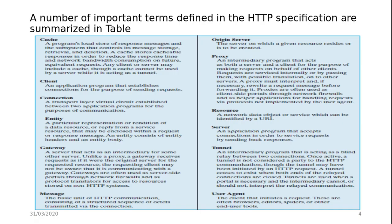A number of important terms defined in the HTTP specifications are summarized in a table. The first one is cache. A cache is a program, a local store of response messages and the subsystem that controls its message storage, retrieval, and deletion. A cache stores cacheable responses in order to reduce the response time and network bandwidth consumption on future equivalent requests. Any client or server may include a cache, though a cache cannot be used by a server while it is acting as a tunnel. Cache is mostly client-related.